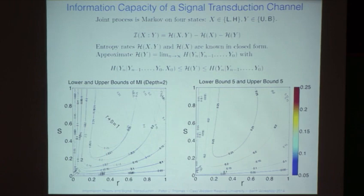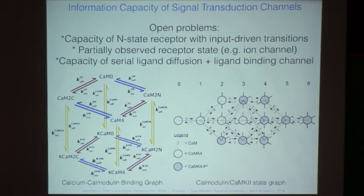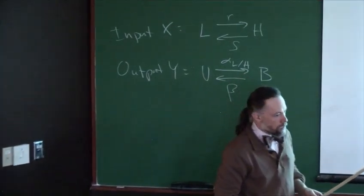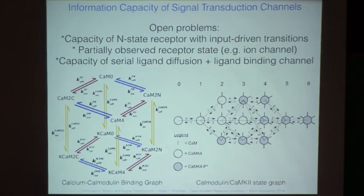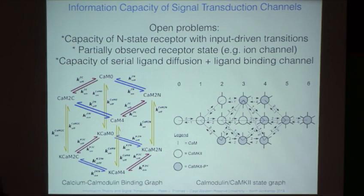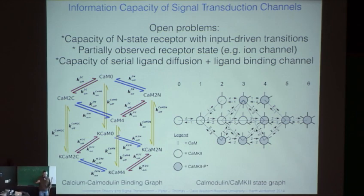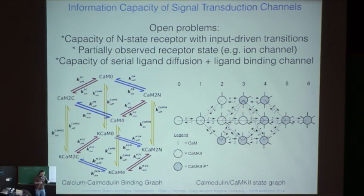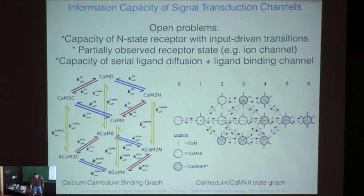What we'd like to do is extend this to an N-state receptor with arbitrary transitions. In many instances, you can't observe all transitions. For example, the Hodgkin-Huxley sodium channel model is a graph of 8 states and 20 transitions — if you're in 7 of the 8 states, the channel is non-conducting and those all look the same; only in the 8th state does it conduct. So you can only partially observe the Markov process. Once we incorporate the diffusion and secretion processes alongside the binding process, we'll be in a position to make quantitative comparisons to specific biological systems.